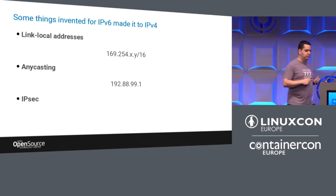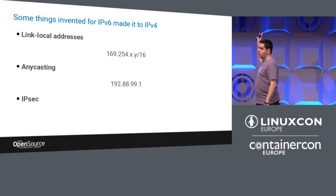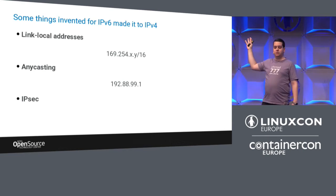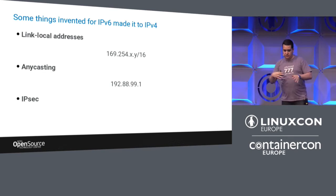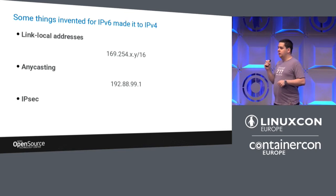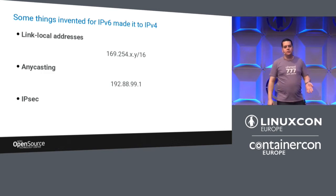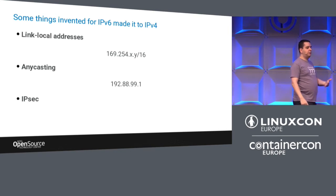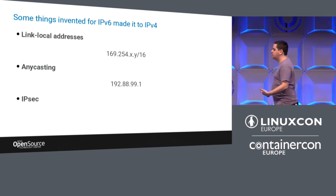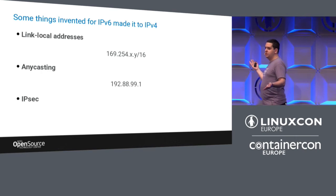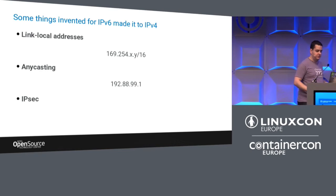Anycasting is another feature — a particular IP address is not one server but actually multiple. It's not load balancing with proxying behind the scenes; at the IP level it might reach multiple different servers. IPsec was created as a privacy extension for IPv6, providing authentication and encryption. It was so useful they decided to do it on IPv4 as well, which led to VPNs being built on top of IPv6.